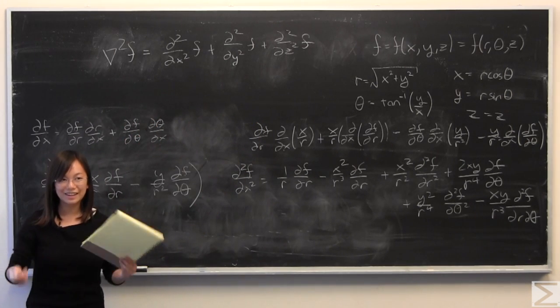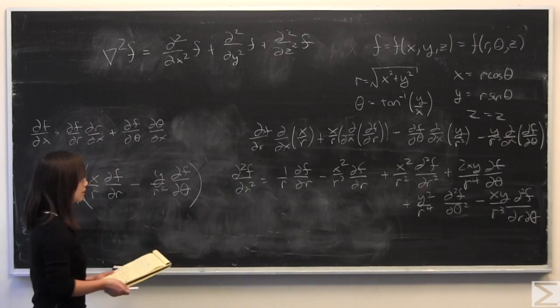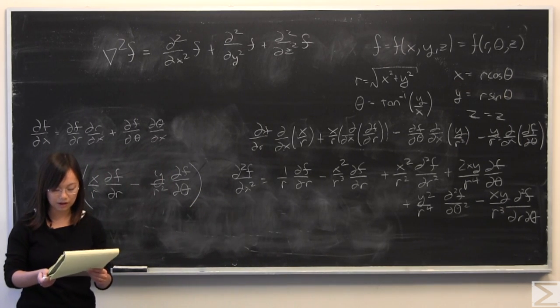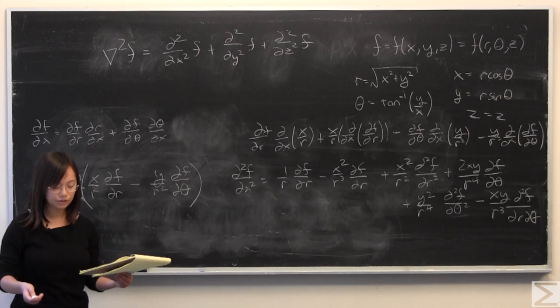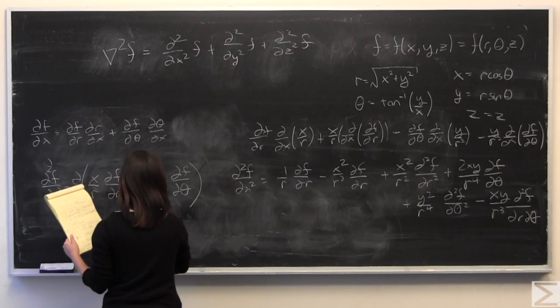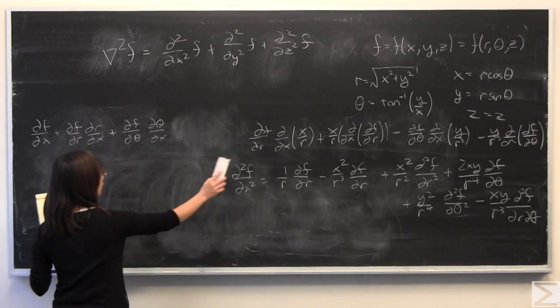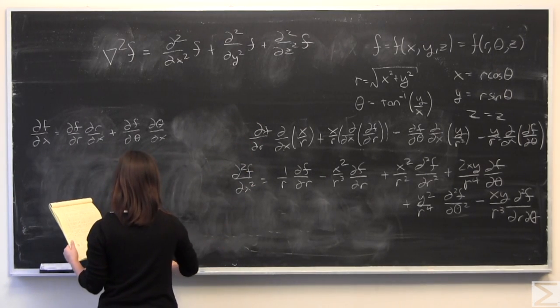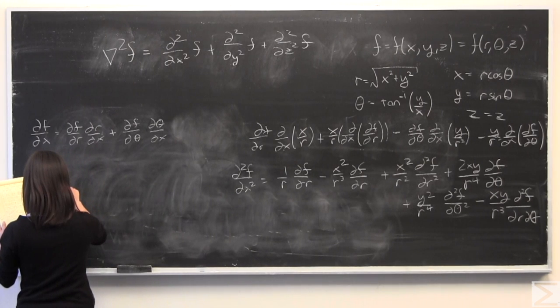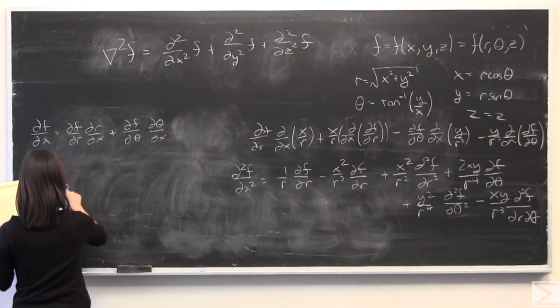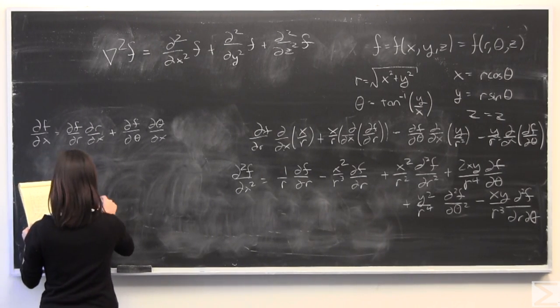After you get done with that, you finish up the second partial derivative of f with respect to y. You'll see that once you add the two and also realize that there is no change in z from the coordinate systems, you'll finally get your Laplacian in cylindrical coordinates.